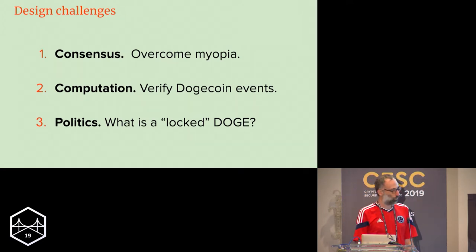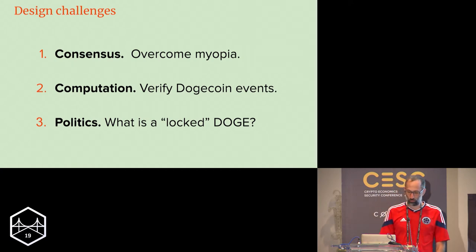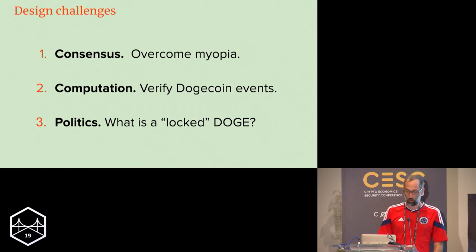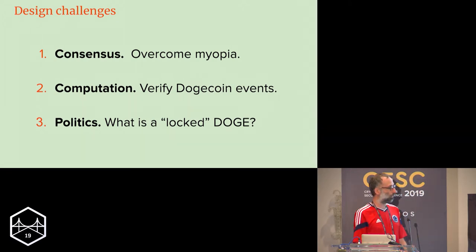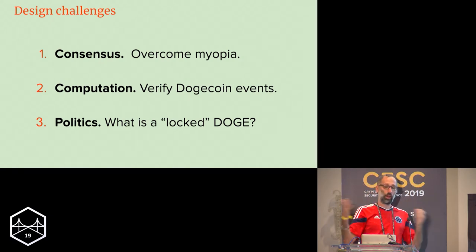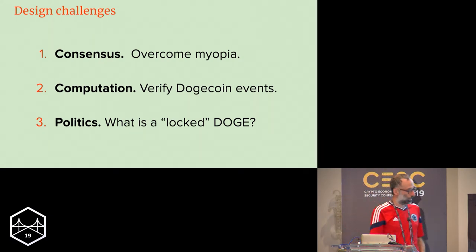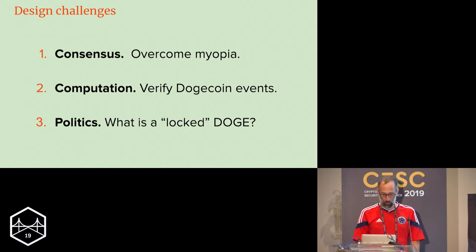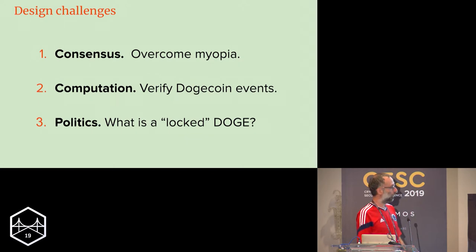As I alluded to in the previous slides, you have the issue of consensus — what I called overcoming myopia — which is that Ethereum miners can't see what's going on in Dogecoin. Somehow they have to know what happened over there in order to generate Wow and so forth. In computation, this involves checking the Dogecoin proof of work.